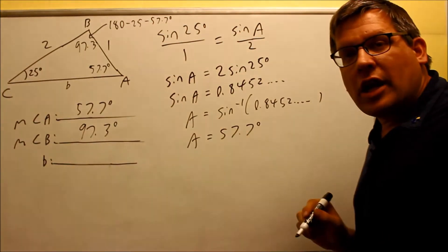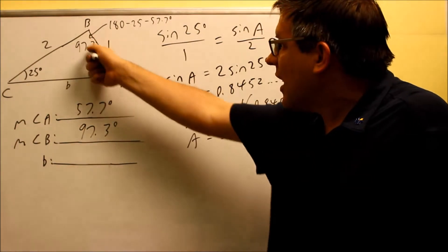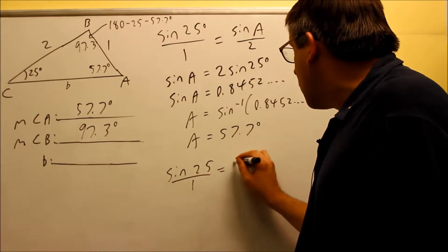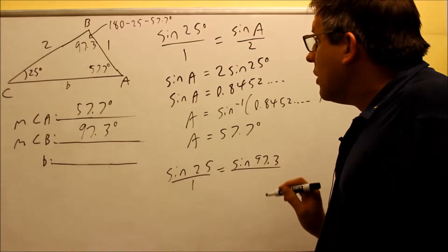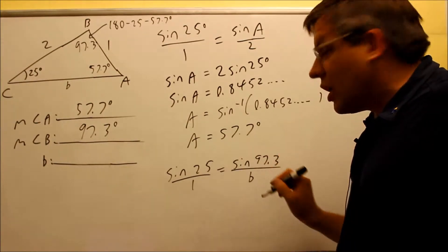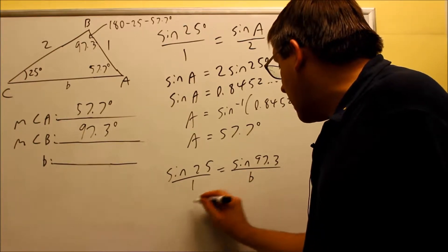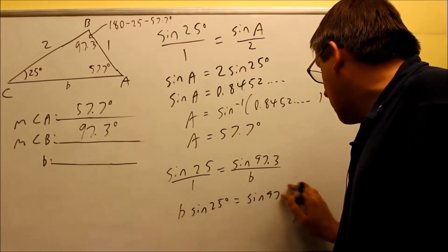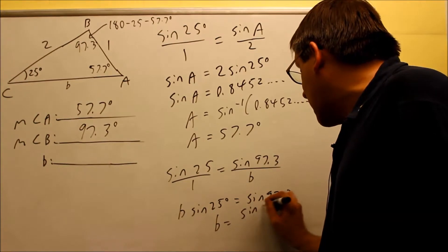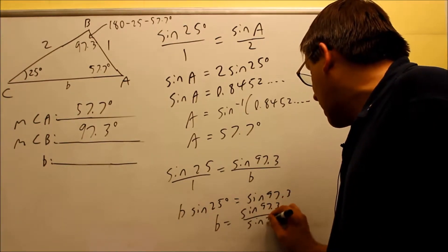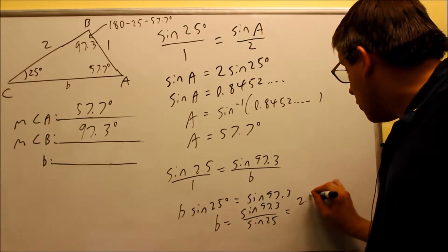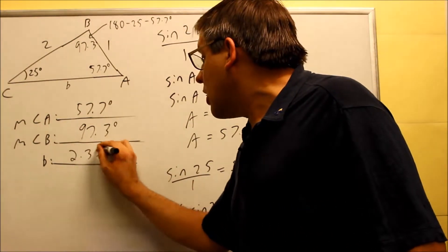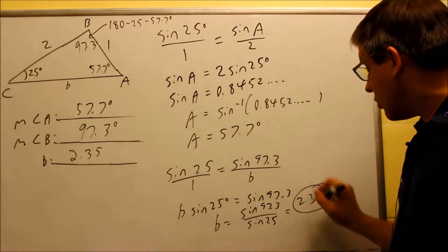Now we have both angles found, so we have enough information to solve for side B. We set up another ratio: sine 25 over 1 equals sine 97.3 over B. Cross-multiplying gives B times sine 25 equals sine 97.3. Dividing, we get sine 97.3 divided by sine 25, which gives us B equals 2.35.